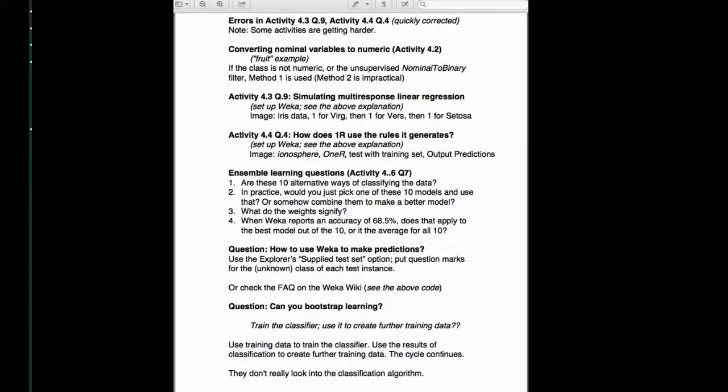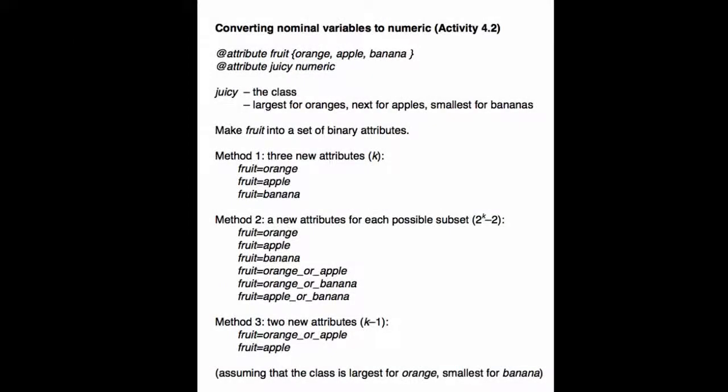There was a question about converting nominal variables to numeric in activity 4.2. Someone said the result of the supervised nominal to binary filter is weird. Yes, well it is a little bit weird. If you click the more button for that filter it says that k-1 new binary attributes are generated in the manner described in this book if you can get a hold of it. Let me just tell you a little bit more about this. So I've come up with an example of a nominal attribute called fruit. And it has three values, orange, apple and banana.